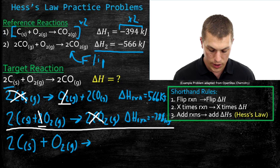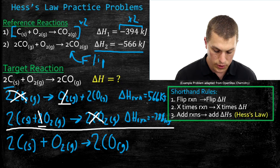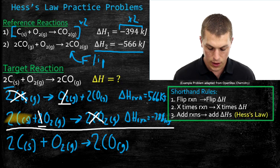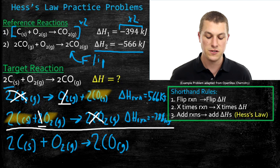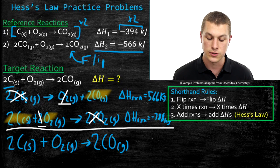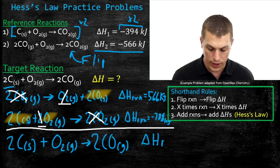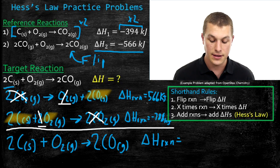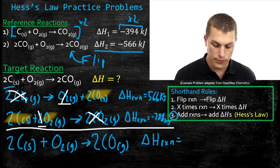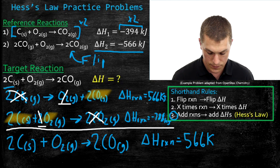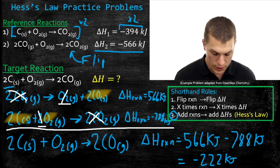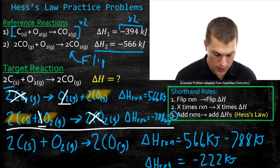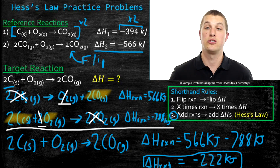On the product side we get two carbon monoxides. So our final combined reaction is two carbon solid plus one oxygen goes to two carbon monoxides — which matches our target reaction exactly. Now we calculate the enthalpy by adding the enthalpies of the two reactions: positive 566 plus negative 788 gives us negative 222 kilojoules. That's our final answer — the enthalpy for our target reaction is negative 222 kilojoules.